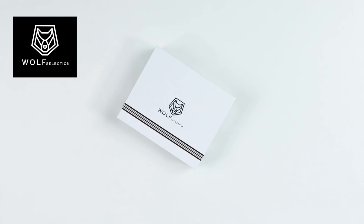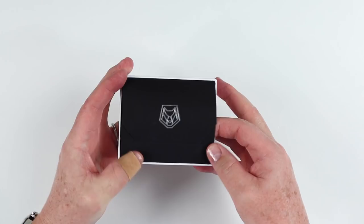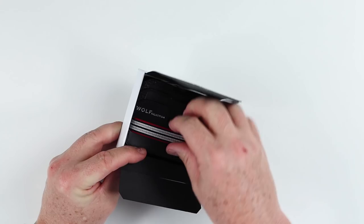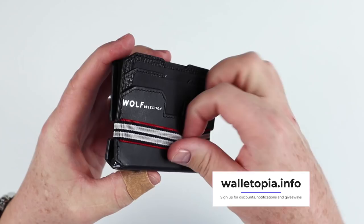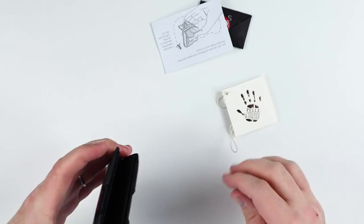Here we have the Wolf Selection. This is called the Flex Wallet. Let's open this paper here. And here is the wallet itself. Take it out. Interesting looking. We've got a strap that goes along the front here. Looks like it's some cards. Oh, looky. Party.